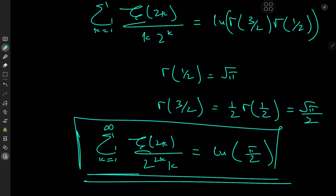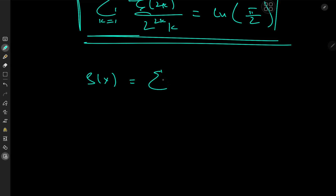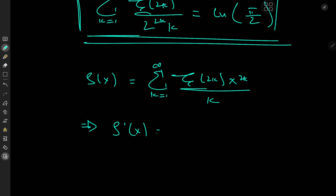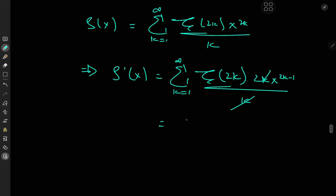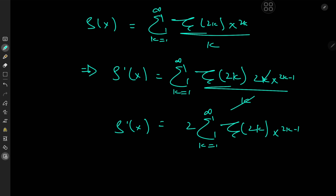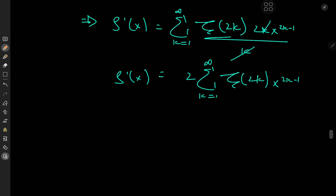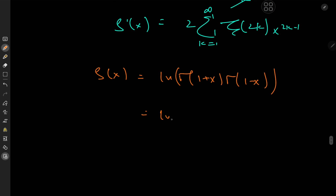We're not done yet, because this expression can be treated as a function of x. We have S(x) equals the sum over k of zeta(2k) · x^(2k)/k. Differentiating with respect to x gives S′(x) equal to the sum over k from 1 to infinity of zeta(2k) · 2k · x^(2k−1)/k, and after cancellation this is twice the sum over k from 1 to infinity of zeta(2k) · x^(2k−1). We know S(x) = log[Γ(1+x)Γ(1−x)] = log Γ(1+x) + log Γ(1−x).